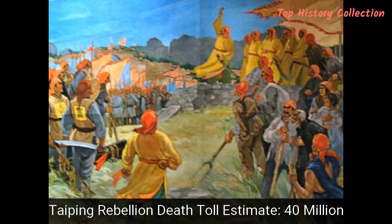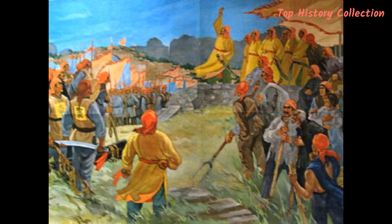Number 7: Taiping Rebellion – Death Toll Estimate: 40 Million. Jump forward a thousand years and the Chinese are at it again, this time with some help from the French, the British, and some American mercenaries. In 1850, the Qing dynasty was in charge of China. They had suffered some major problems before the rebellion, with natural and economic disasters causing havoc, not to mention the Europeans bringing opium addiction to China. So up stepped Hong Xiuquan, who amongst other things claimed to be the younger brother of Jesus Christ. Hong established the Taiping Heavenly Kingdom, and the carnage began.